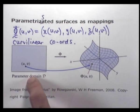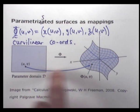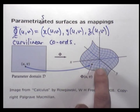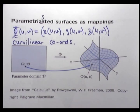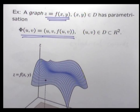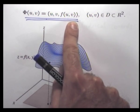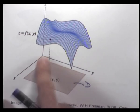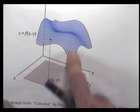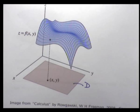We've got some parameter domain D of this vector-valued function. Under the parametrization, the image maps out a surface in R³. The simplest case is when the surface is a graph. In that case, we can use this parametrization, and the surface lies above D.